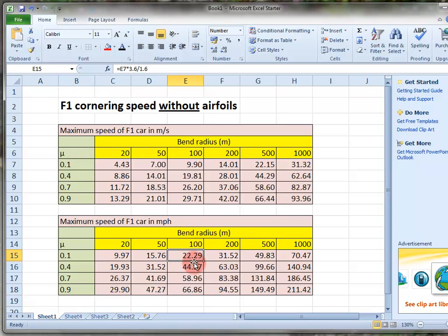Just looking at a typical result, this one here, 22.29. That is the maximum speed of the car around the corner for a bend radius of 100m and a coefficient of friction of 0.1. So that would be a slick tire in the wet around a 100m bend, 22.29 mph.